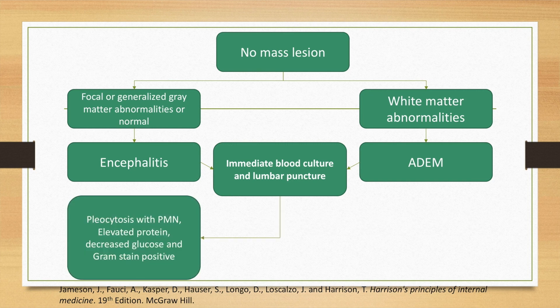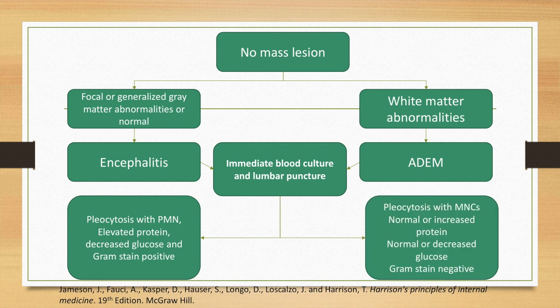If the CSF shows pleocytosis with PMNs, elevated protein, decreased glucose, and gram stain positivity, we think of an acute bacterial process. If it shows pleocytosis with MNCs, normal protein, normal or decreased glucose, and gram stain negativity, we think of a viral process. We will discuss CSF analysis in detail.